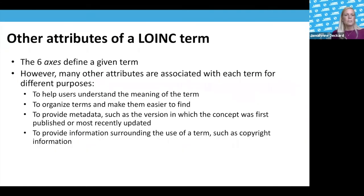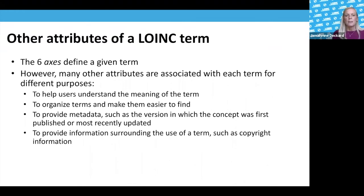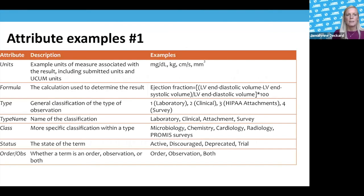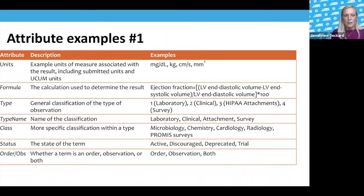Beyond the six axes, we have many other attributes to help users understand the meaning, organize terms, provide metadata, and provide information around use of the term such as copyright. These are meant to help guide mapping and guide use of the term, but the six axes are the most important attributes.